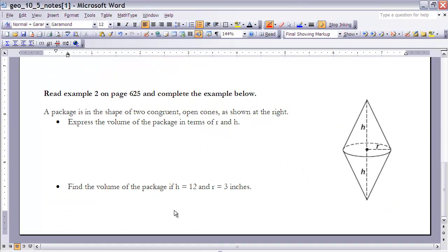Before I go through the second example, you might want to look at example two on page 625 in your book before continuing on with this. So it says a package is in the shape of two congruent open cones as shown at right. Express the volume of the package in terms of r, its radius, and h, its height.